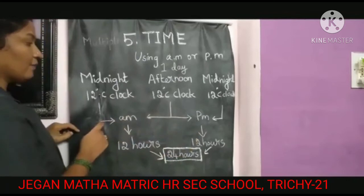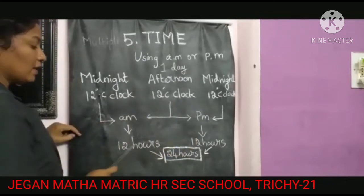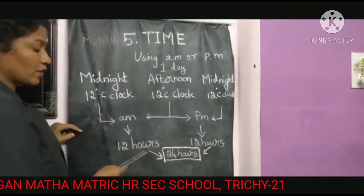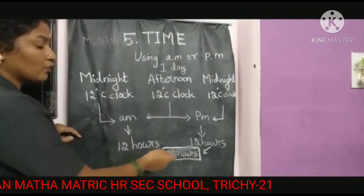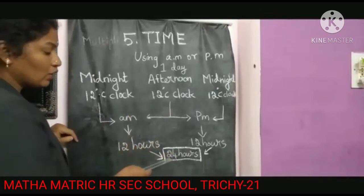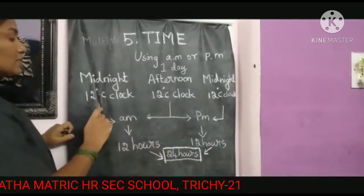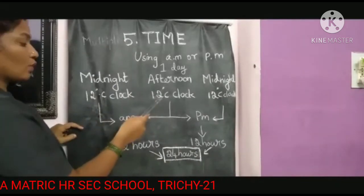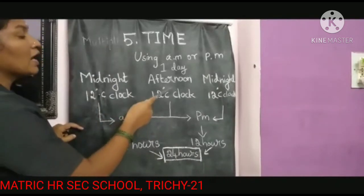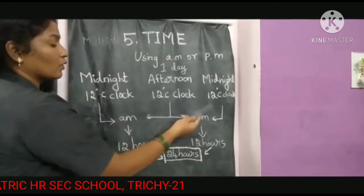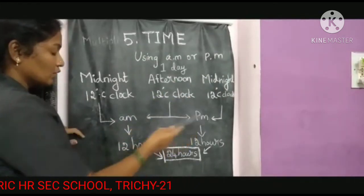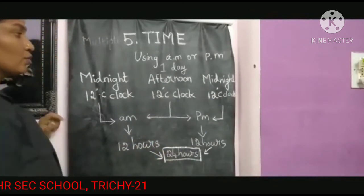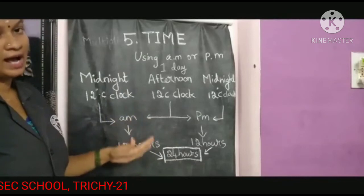AM has 12 hours and PM has 12 hours. So 12 hours plus 12 hours is totally 24 hours. That's why 1 day equals 24 hours. Midnight 12 o'clock to afternoon 12 o'clock is AM, and afternoon 12 o'clock to midnight 12 o'clock is PM.